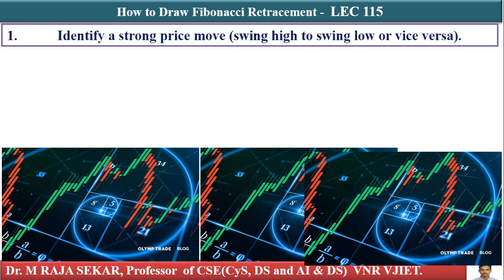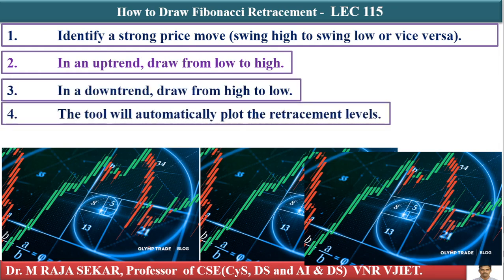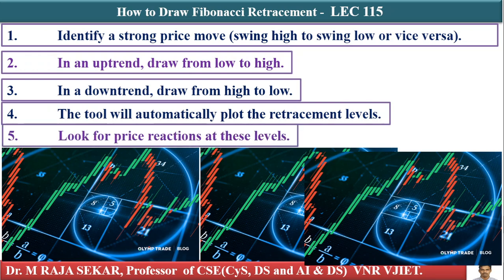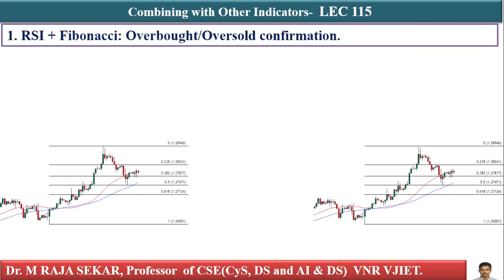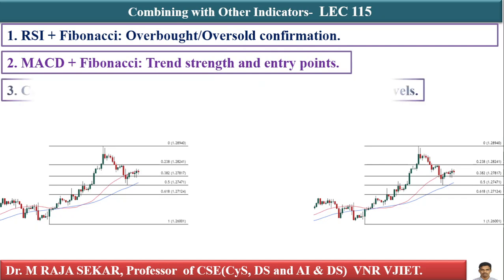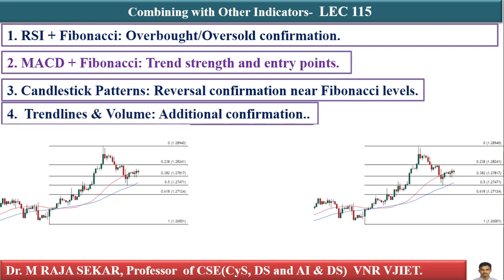How to draw Fibonacci retracement: identify strong price moves — swing high to swing low or vice versa. In an uptrend, draw from low to high; in a downtrend, draw from high to low. The tool will automatically plot the retracement levels. Look for price reaction at these levels to understand your support and resistance. You can also use RSI with Fibonacci for identifying overbought and oversold conditions, MACD with Fibonacci for trend strength and entry points, candlestick patterns for reversal confirmation near Fibonacci levels, and trend lines and volumes for additional confirmation.